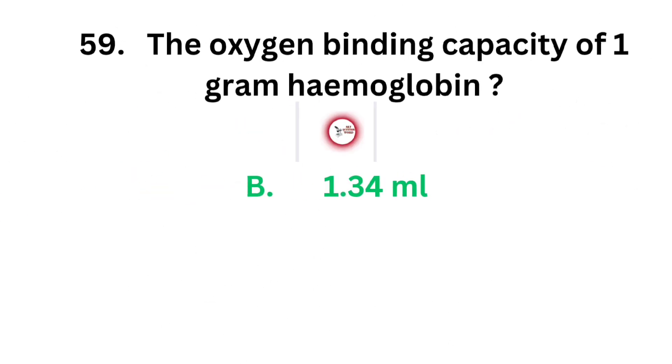The correct answer is option B, 1.34 ml. The oxygen binding capacity of 1 gram of hemoglobin is 1.34 ml.